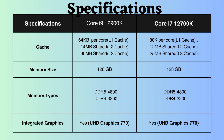Despite the slightly smaller L1 cache size in the Core i9 compared to the Core i7, the L2 and L3 cache sizes of the Core i9-12900K are significantly larger than those of the Core i7-12700K. This larger cache size in the 12900K provides an advantage in scenarios where data access patterns favor smaller, faster caches, such as some single-threaded workloads.